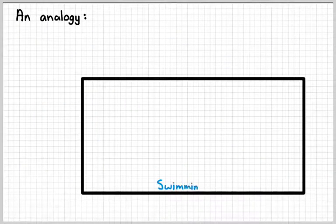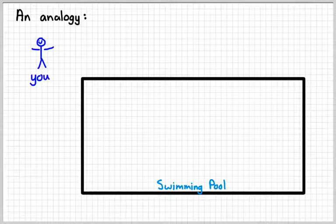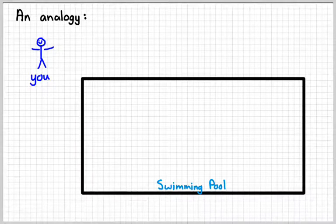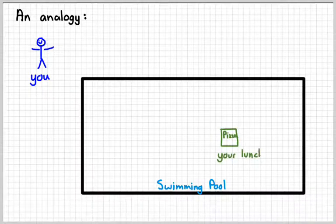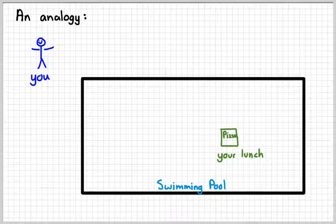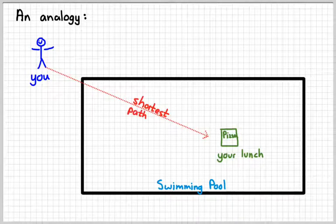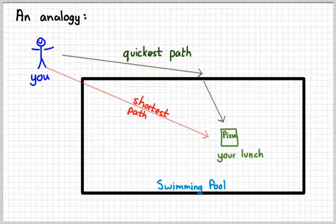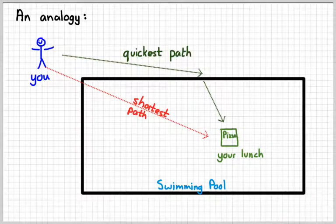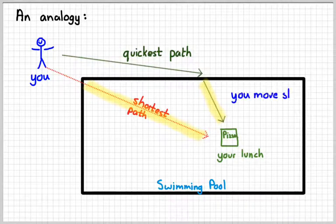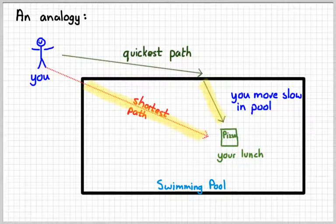Let's draw an analogy to see if we can understand. Suppose that this is a swimming pool and that is you over there. And then for some reason, somebody runs by you, takes your lunch, and throws it in the swimming pool. For some reason, I imagine you just sitting there eating an entire pizza while you're at the swimming pool. Now you could go this path to get your pizza back, but you're probably more likely to follow this path to get your pizza back. The reason that you're more likely to follow that path is because you're going to move through the pool much slower than you're going to move on the sidewalk.